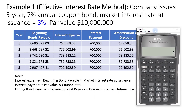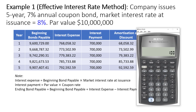For this example, we're going to calculate the initial value or the initial PV of the bond, which is also the sales proceeds. The bond has a tenor of five years, so that is N. 7% is the coupon rate, so the coupon will be 7% times the par value of $10 million — that's $700,000, so that's PMT. The market interest rate at issuance is 8%, that's I/Y, and par value of $10 million is FV. So we compute the present value — that's $9.6 million.